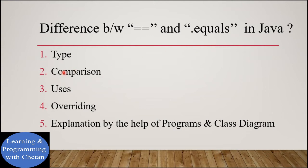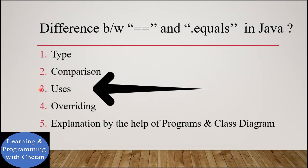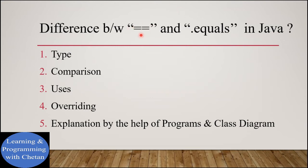Now let us understand our next difference on the basis of uses. The double equals operator can be used with primitive data types along with boolean, and we can also use this equality operator with objects. Whereas the dot equals method is used to compare the content of different objects.